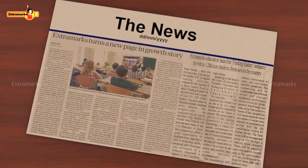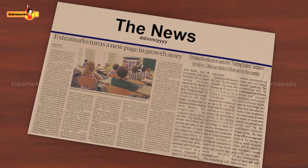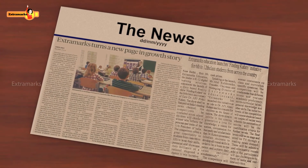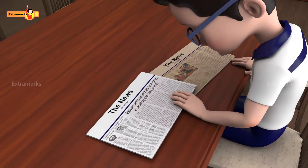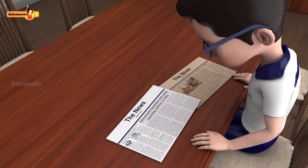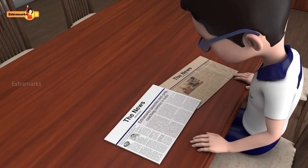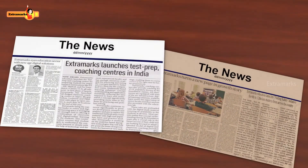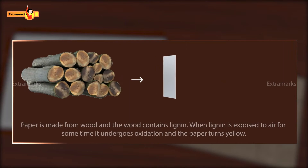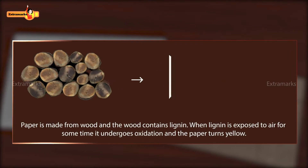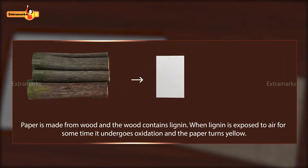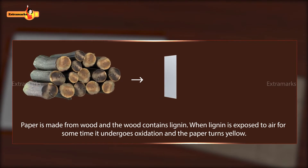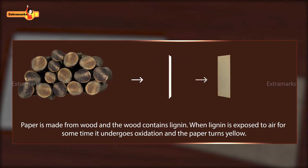This is an old newspaper. It has become dull and looks different from today's newspaper. But how did the color of the newspaper change? Let's find out. Paper is made from wood which contains lignin. When lignin is exposed to air for some time, it undergoes oxidation and the paper turns yellow.